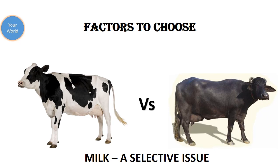Hi friends, we all know that before choosing anything, we should know the details of the parameters, pros and cons, advantages and disadvantages, and after effects. So today I am going to discuss an in-depth analysis of cow and buffalo milk — various factors like water content, fat, protein, and the benefits to be derived if we choose the right milk in our diet as per our need and health condition. Hope this presentation will be helpful for you.